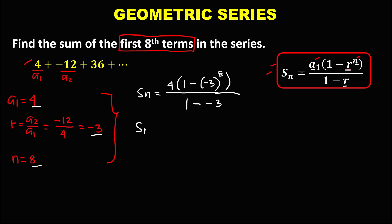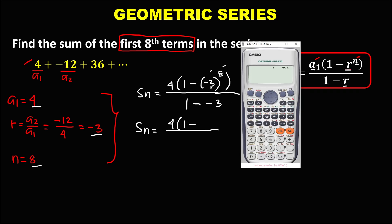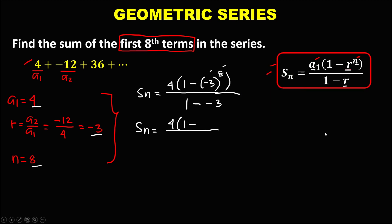To simplify, we have the sum equals 4 times 1 minus negative 3 to the power 8. To find the value of negative 3 to the power 8, since the base is negative, we put negative 3 inside parentheses. Negative 3 to the power 8 equals positive 6,561. Then this double negative becomes positive, and 1 plus 3 equals 4.